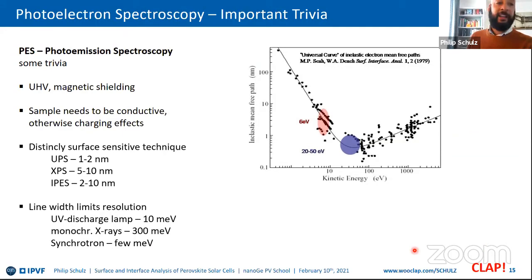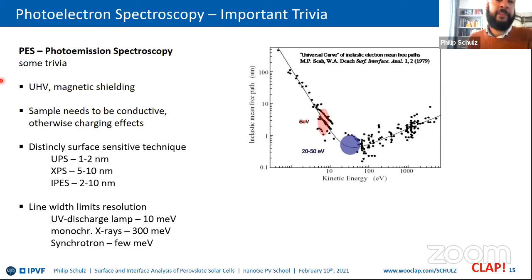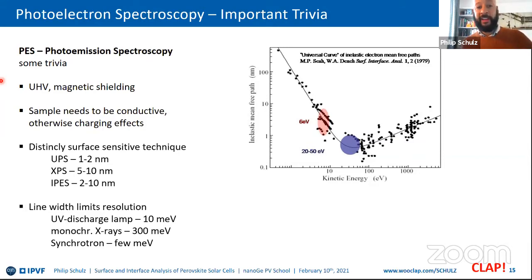Now a quick check: can XPS be employed to measure the full electronic structure of a solid-state body? Four possible answers: (1) Yes, we can measure the complete electronic structure; (2) No, only properties of occupied states are accessible via XPS; (3) No, we can only measure energy level positions; (4) No, not the entire electronic structure, but we can assess the effective mass of electrons.